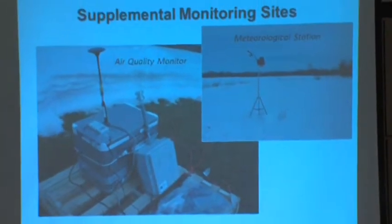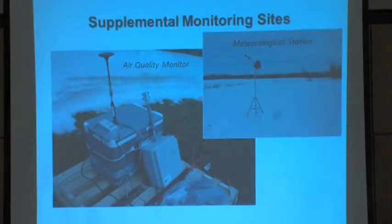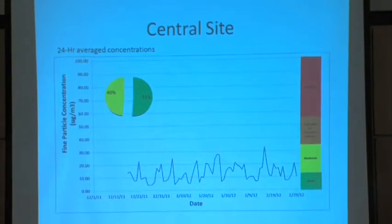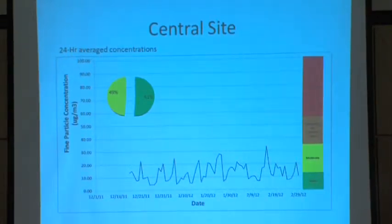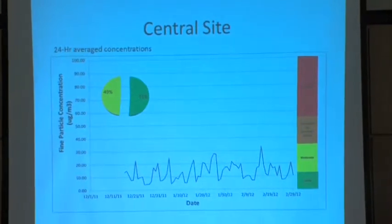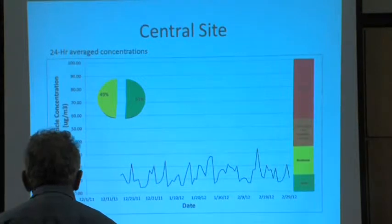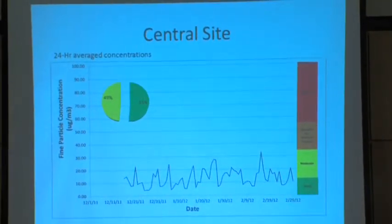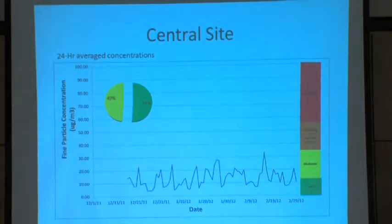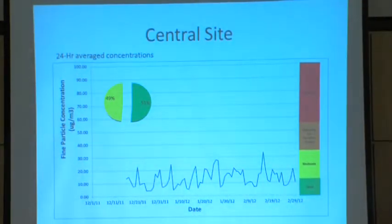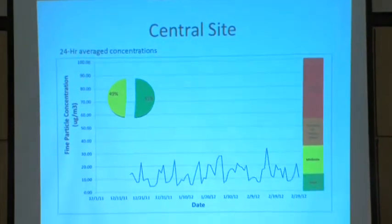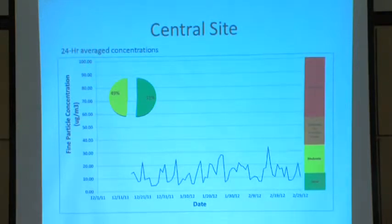This is what our supplemental sites look like with these little air quality monitors. We also had a meteorological station there so we could chart the wind speed and wind direction at all these different sites. Here is a graph of the 24-hour average concentrations of PM2.5 at our central site. It's a pretty boring graph — not very interesting or exciting. Half the time air quality is good, the other half it's moderate.